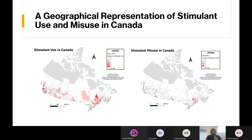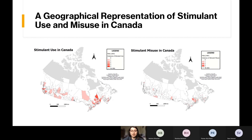Looking at the geographical distribution, we do see that cities tend to have higher usage and misuse of stimulants. This may be due to busier, high-pressure lifestyles being more prevalent in cities, but due to our limited sample size, we realize that more research is required to confirm this with confidence. The same follows for more specific demographics such as healthcare workers, students, and veterans — stronger conclusions can be determined if each of these variables has higher representation.